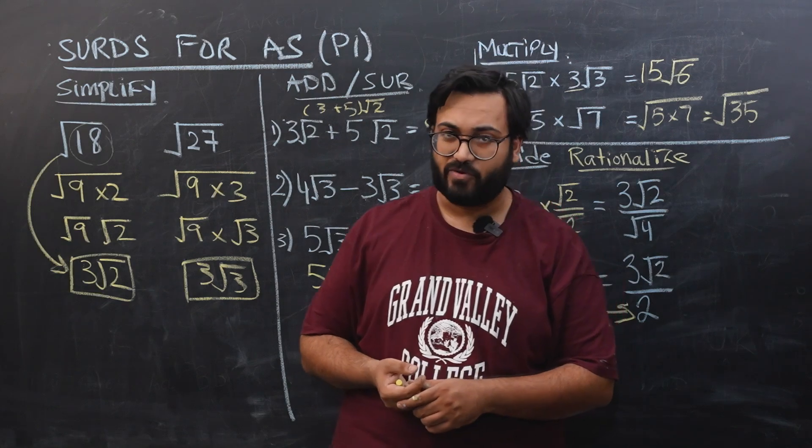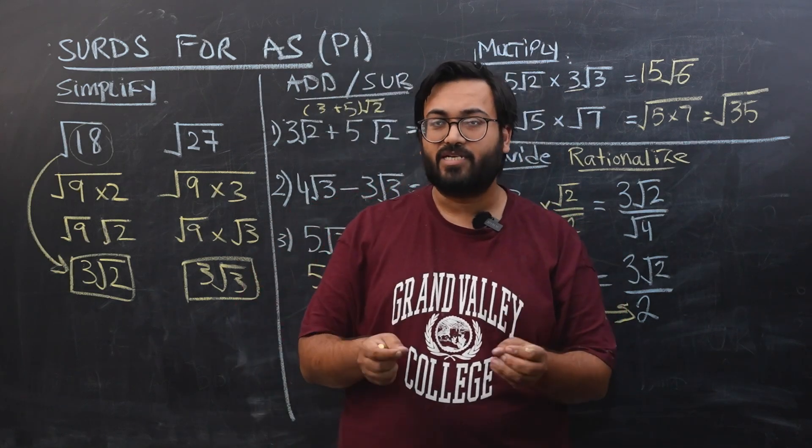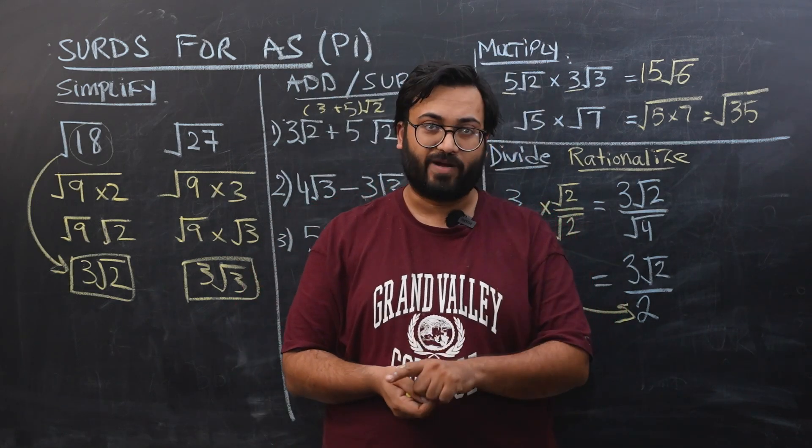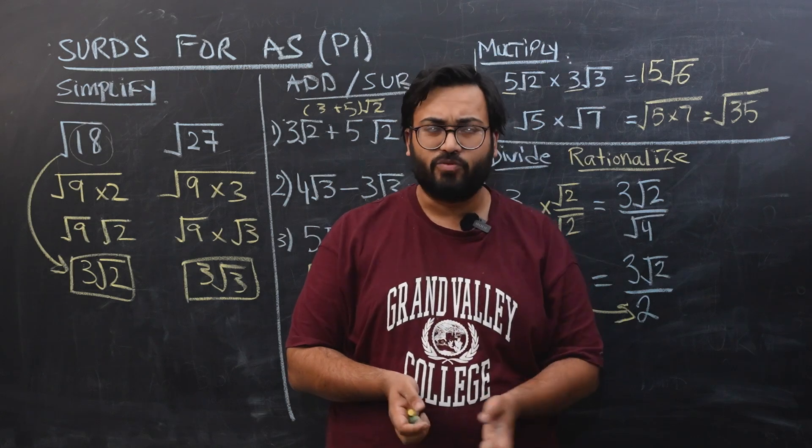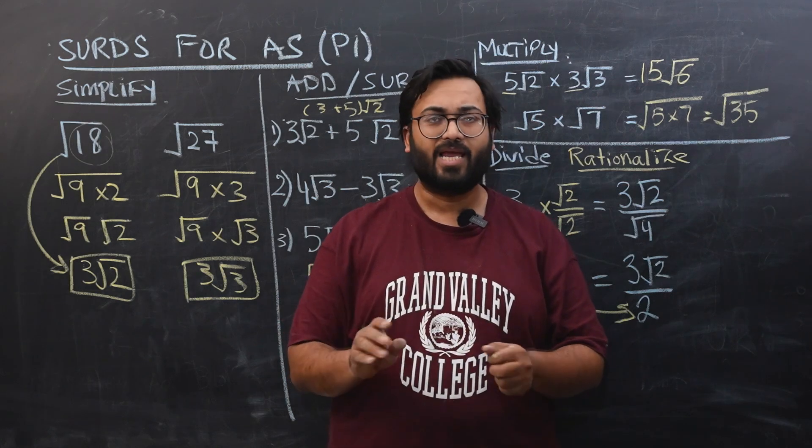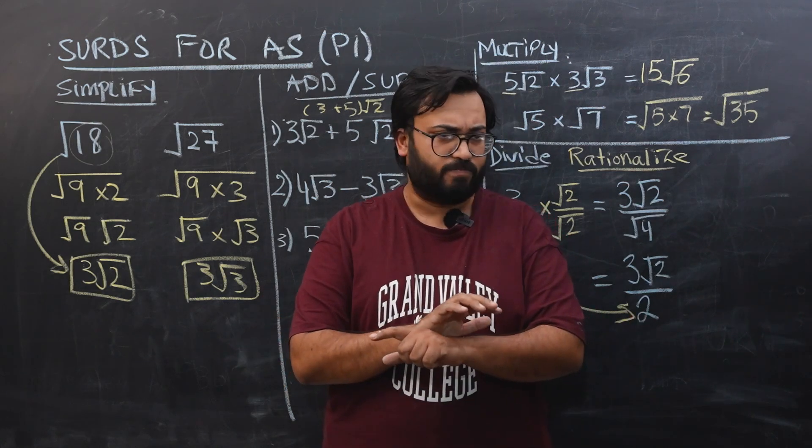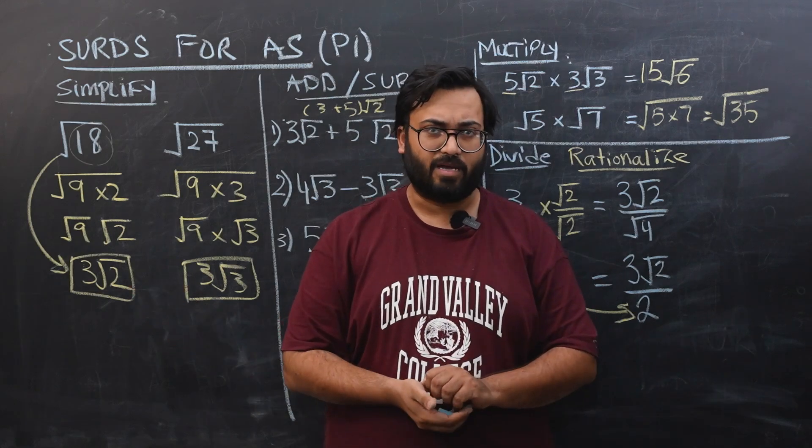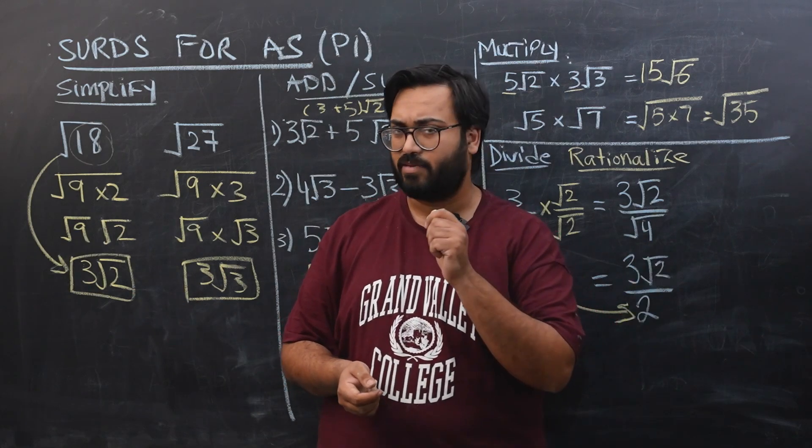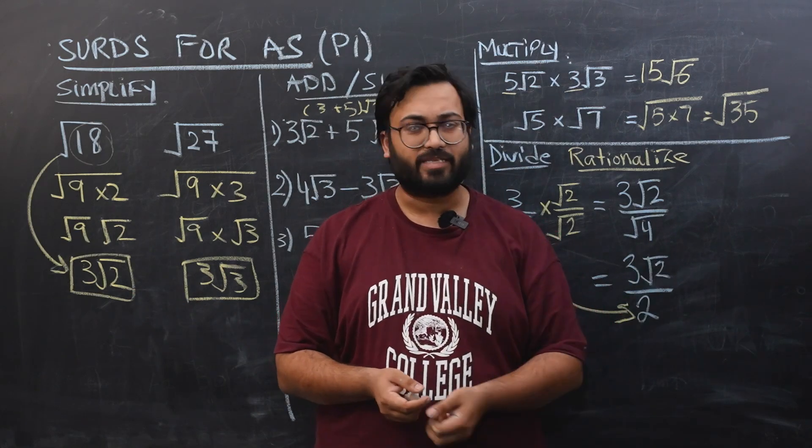So this is the knowledge of surds that you need in A Levels Paper 1 mathematics, and you might be tested at many places. And this does not have a particular chapter. This is all over the syllabus. You might find these in algebra, sometimes in trigonometry, sometimes in circular measure. So you might find them scattered all over the place.